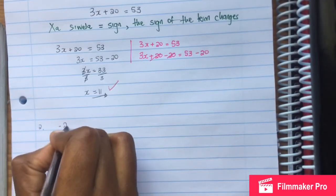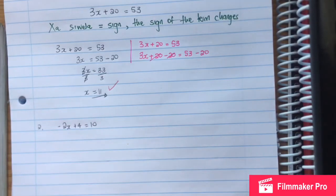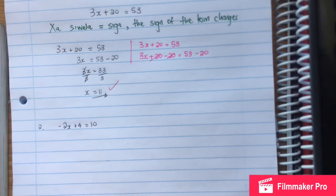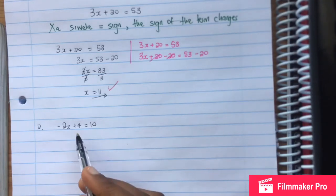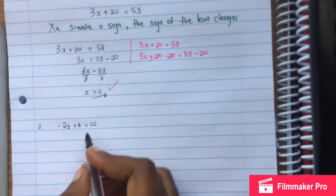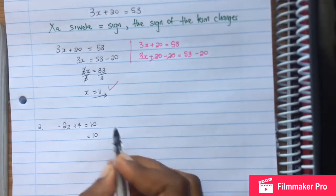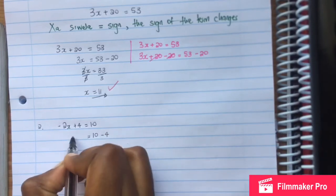Negative 2x plus 4 equal to 10. When you cross the equal sign, the sign changes. So we want the like terms together, which is 4.